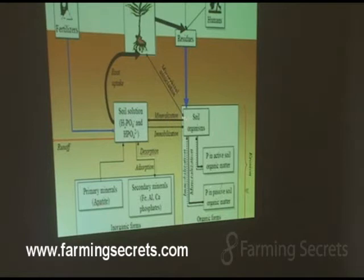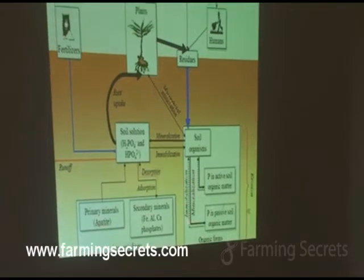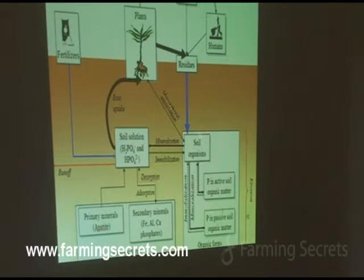A very important one that is increasingly being used in farming, and particularly in cropping, is the mycorrhizal association. The key here is that the big box there is looking at all the organic forms of nutrients, but what really is the key to that organic nutrient uptake and being metered out to the plant when the plant needs it is the soil organisms.